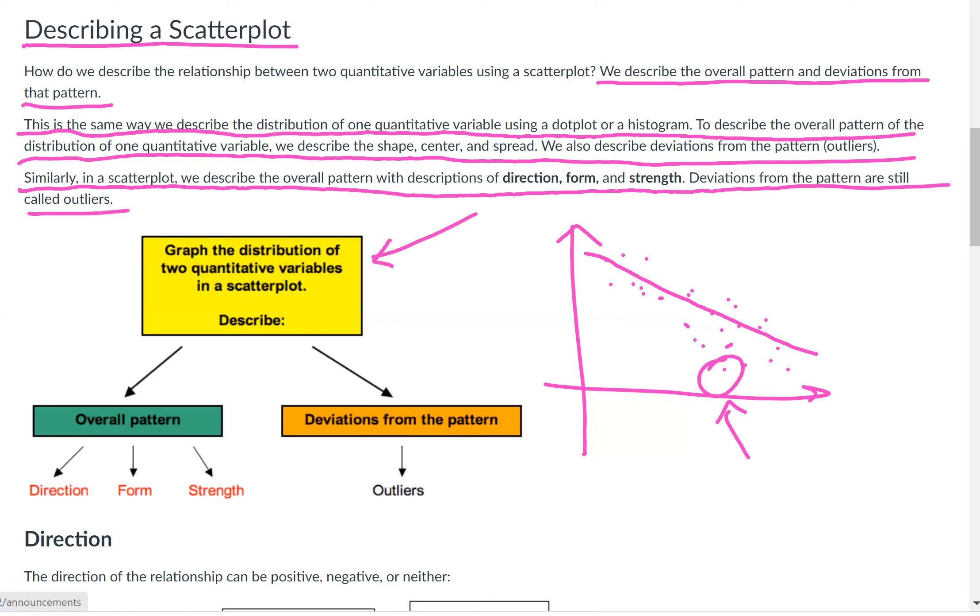We'd like to first graph the distribution of the two quantitative variables in a scatter plot. Like we said, you got your response variable and your explanatory variable instead of x and y. And then we'd like to describe first the overall pattern. What direction are they going in? As the explanatory variable gets larger, what happens to the response variable? Is it getting larger or smaller? The form, what kind of a shape is it? Is it a curve that they're all lining up in or is it a line? And the strength also. By strength, I guess we mean how close is it to a line or a curve or whatever form you're thinking.